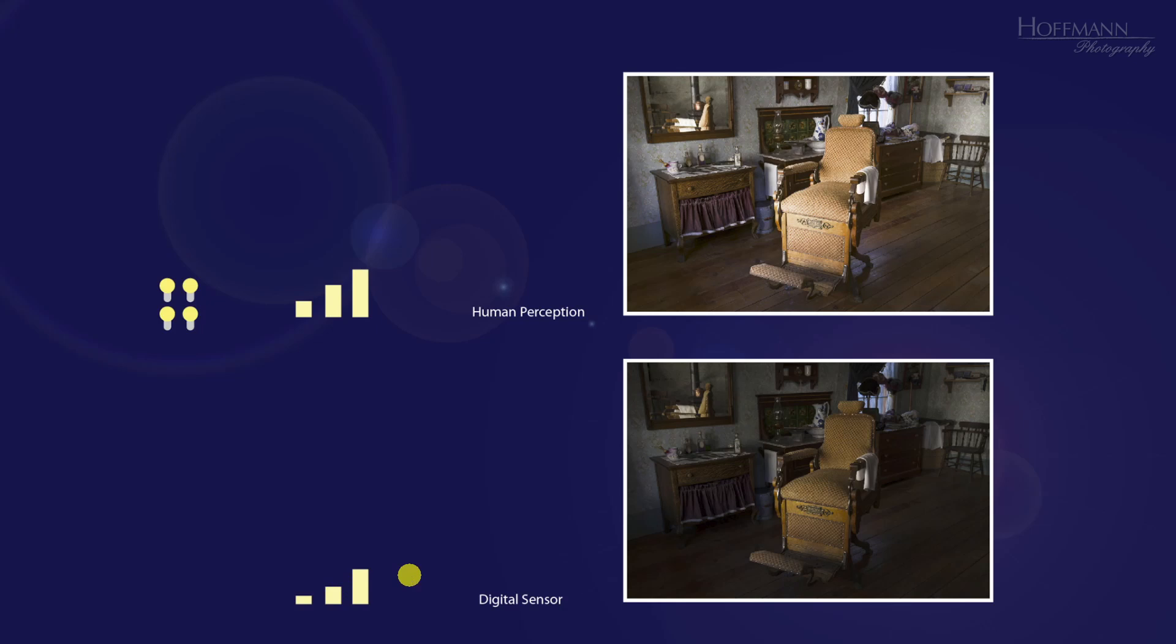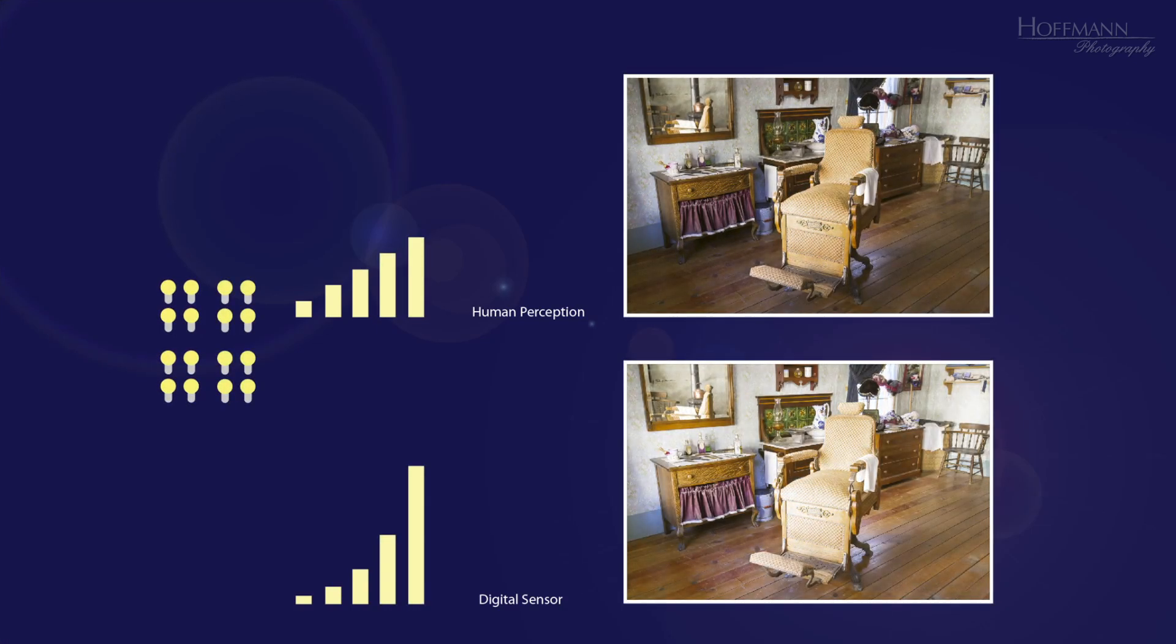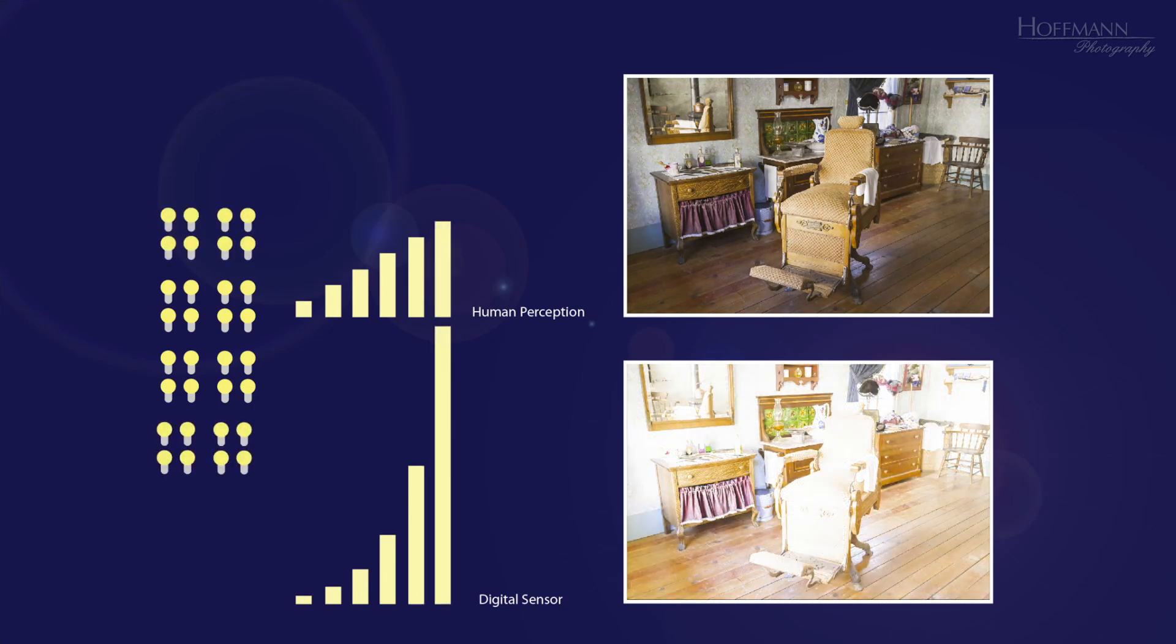By now, you probably guess where this is headed. We double the amount of light again and again. At some point, our photo will be overexposed, while our brain still perceives a perfectly exposed image. And let's double the amount of light a last time.